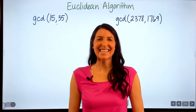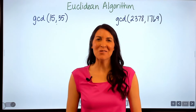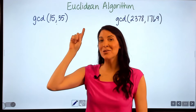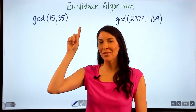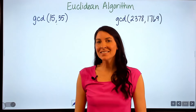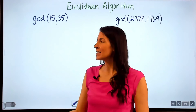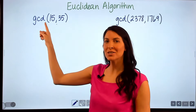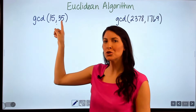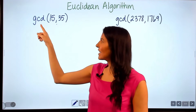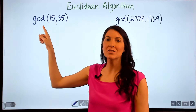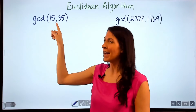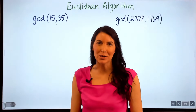Hi everyone, it's Christy. In this video I'm going to show you how to use the Euclidean algorithm. This algorithm allows us to find the greatest common divisor between two integers, and the greatest common divisor is the largest integer that divides both numbers.